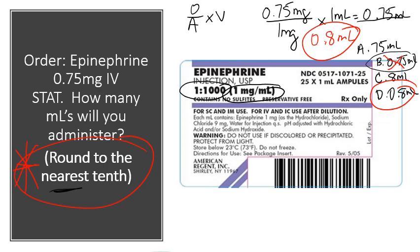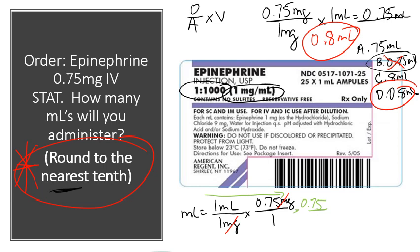For dimensional analysis: solving for mL, we have 1 mL over 1 milligram, and we're giving 0.75 milligrams. Cancel the like units, multiply across the top to get 0.75, and the bottom to get 1. That gives 0.75 mL, but we must round to the nearest tenth — looking at the hundredths place — so the answer is 0.8 mL.